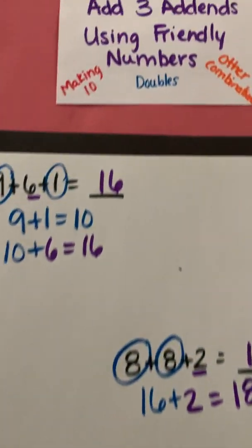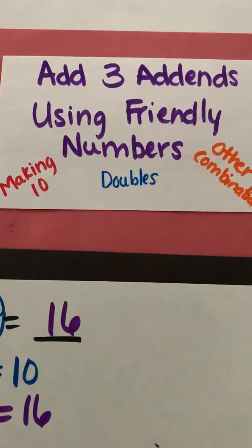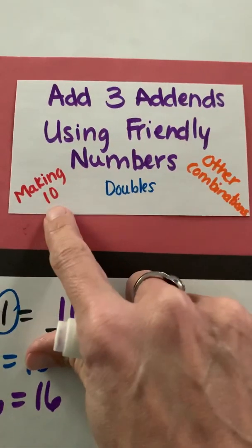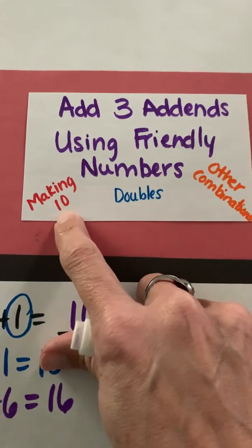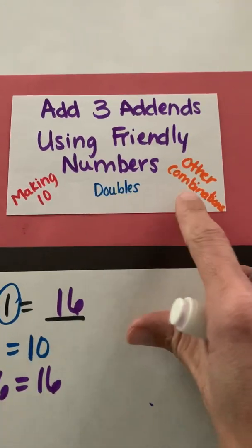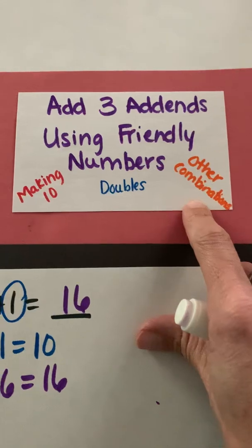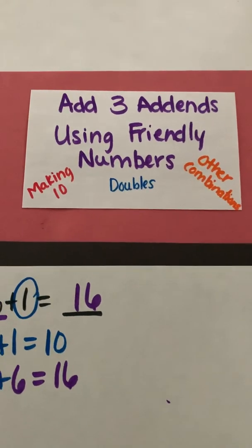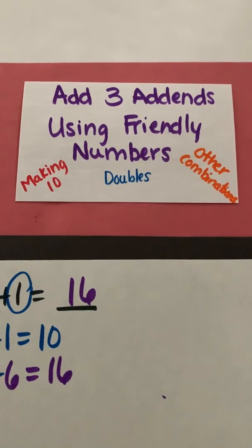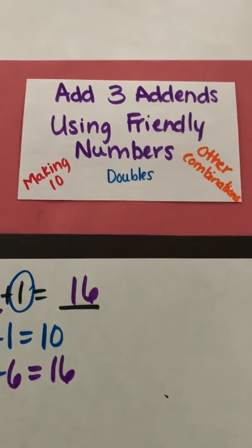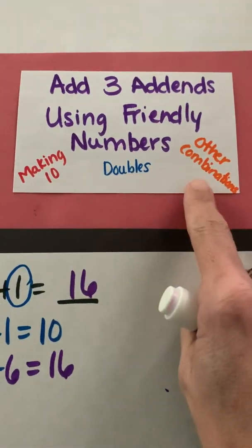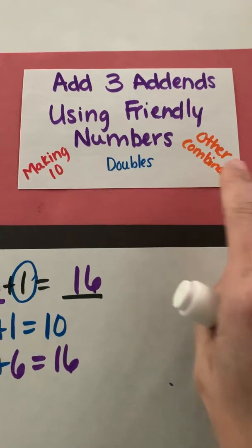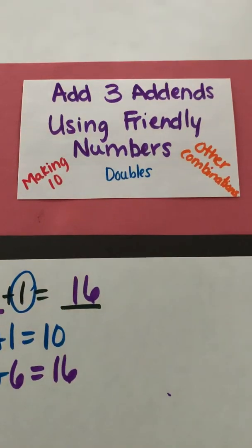But definitely some strategies to help you with adding 3 addends is to look: Do any of the numbers make 10? Are there any doubles? Are there any other friendly combinations? Now you're going to try some on your own and begin recognizing what type of strategy you used. Did you use making 10? Did you use doubles? What was the other combination you may have used? Alright. Wish you the best of luck.